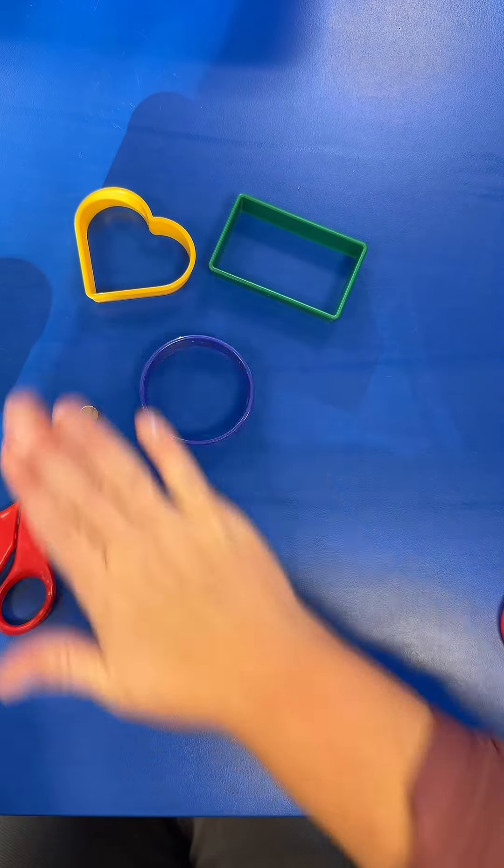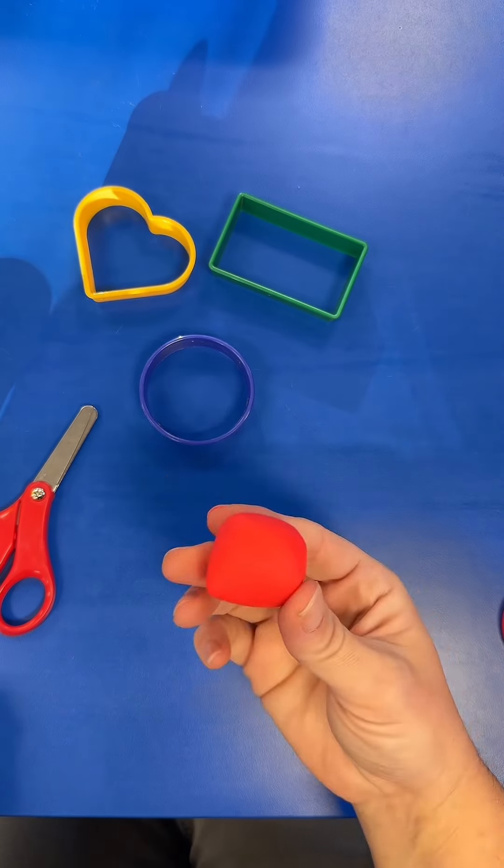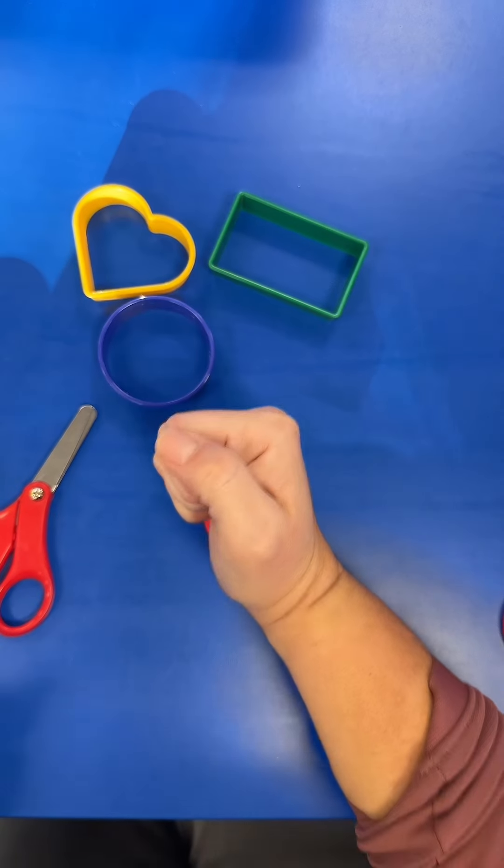The first thing we're doing is making a ball. The first thing you're going to do is squeeze it between your fingers to make it kind of like a ball, then roll it between your hands or on the table.